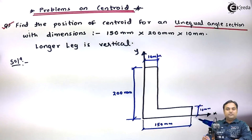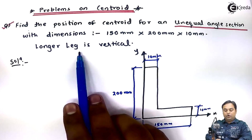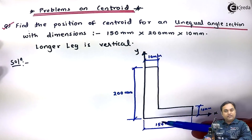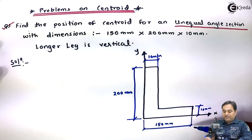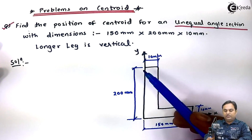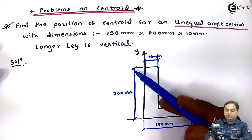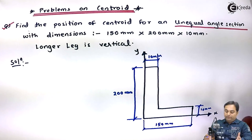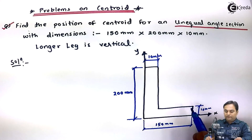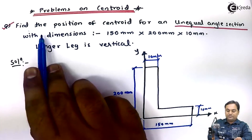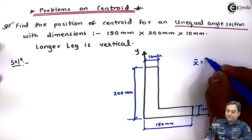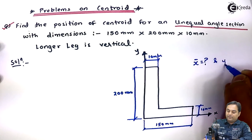This is the angle section given. They are saying the longer leg is vertical. For this angle section, we have a 150 mm leg and a 200 mm leg. Since 200 mm is the longer leg, we keep it as vertical. For this unequal angle section, we have to locate the centroid — that is, we have to calculate x̄ and ȳ.